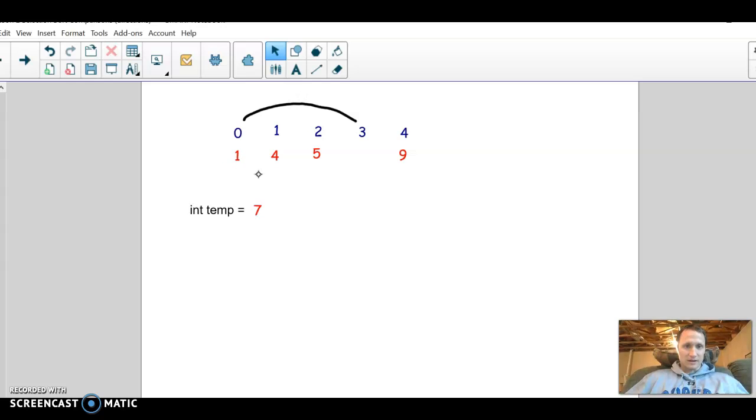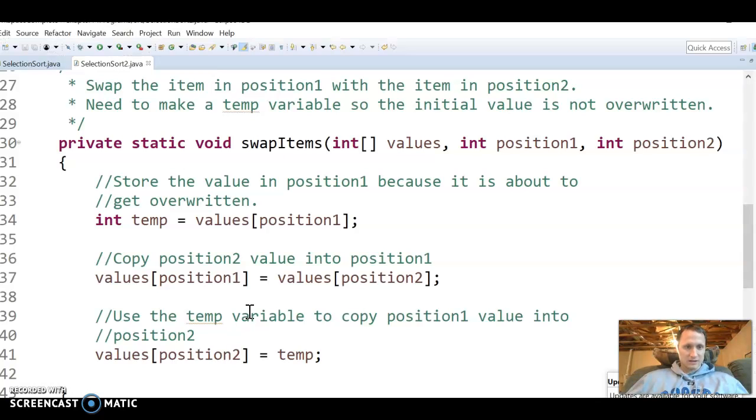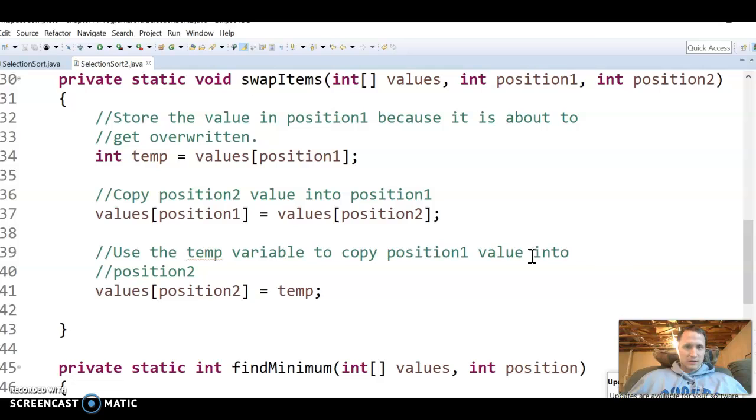And then you'd have to set array position zero to be array position three, which would look like this. And then you'd set the min position for this position, so array position three would now become the temp variable. So that's what it kind of looks like.